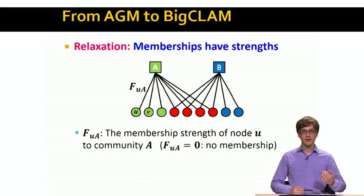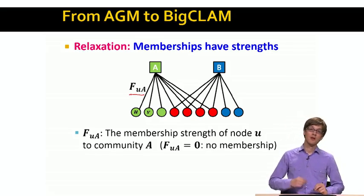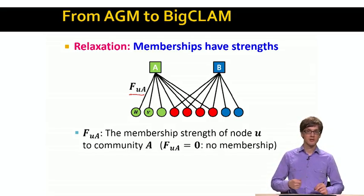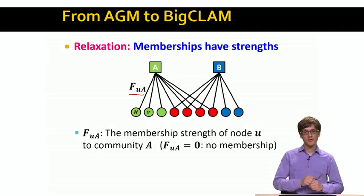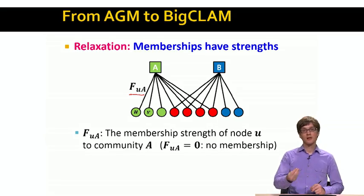The idea now is that rather than every node having zero-one type of membership — meaning I can either be a member of a given community or not — we now want to model the strength of every node's community membership. We will have a non-negative strength of every node being a member of a given community. If the strength is zero, the node is not a member; if the strength is very high, the node is a very active member of that community.